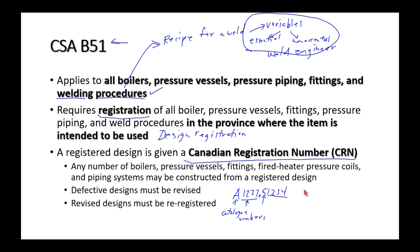You cannot install or use a boiler, pressure vessel, or pressure piping system unless it is a registered design. If you bought a used boiler in the USA and brought it to Canada without a CRN, you could store it but couldn't use it as a boiler. You'd have to contact the jurisdiction, declare it a non-CRN vessel, and go through the registration process.